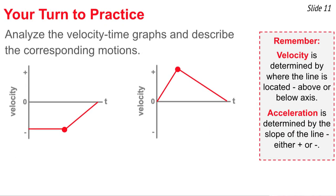Now it's your turn to practice. Here are two problems to solve: interpret the motion of objects represented by two graphs. Remember — velocity is determined by where the line is located on the graph, either above or below the axis and how far. Acceleration is determined by the slope of the line, whether negative or positive. Pause the video, think through the two graphs, come up with a description of the motion, then press play.